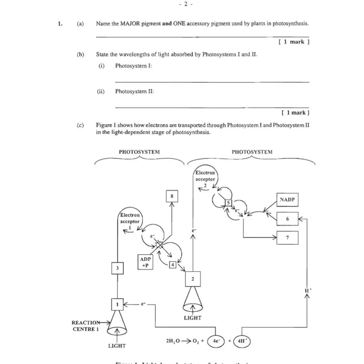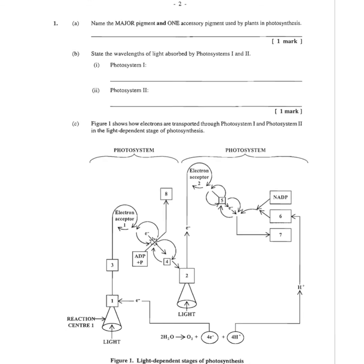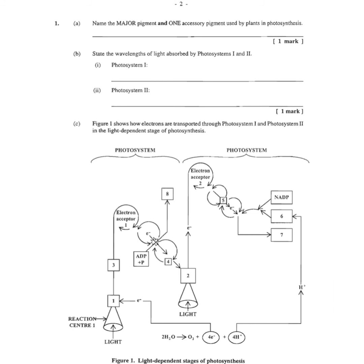CAPE 2006 question 1A asks to name the major pigment and one accessory pigment used by plants in photosynthesis. The main pigment is chlorophyll A — be specific, not just chlorophyll. The accessory pigments are carotenoids and xanthrophylls; you can choose either one.